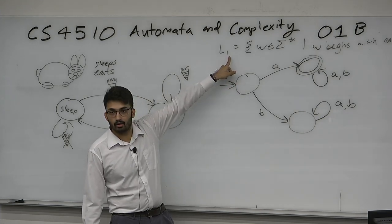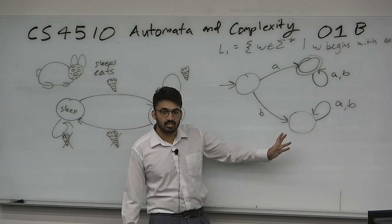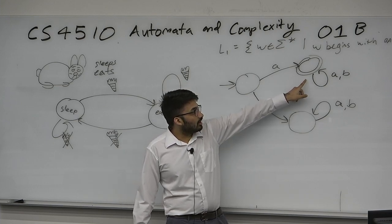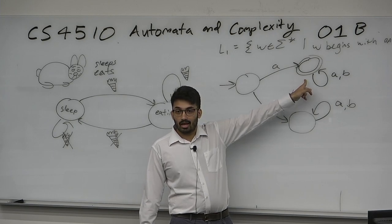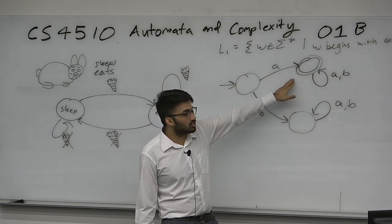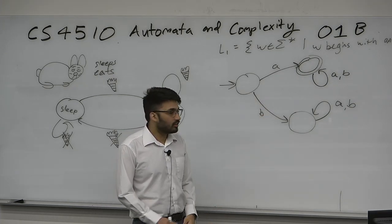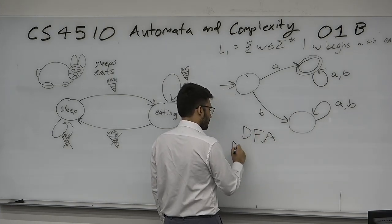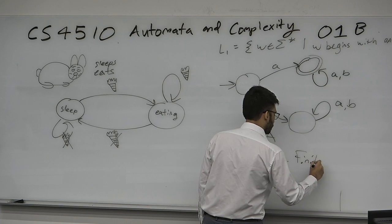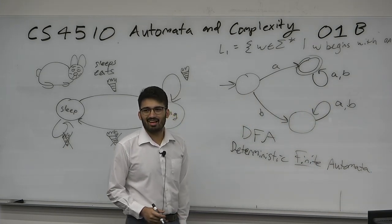We say a string is accepted if it ends on the accept state — the double circle. Any string that lands on the good state has to begin with an 'a', so all good strings are there and all bad strings land on the other two states. This is called a DFA — Deterministic Finite Automaton. The 'finite' is important: the computer is finite in description and size. Every program you've ever written is finite, yet you can run it on infinitely many inputs.